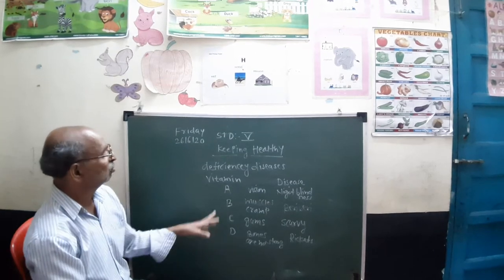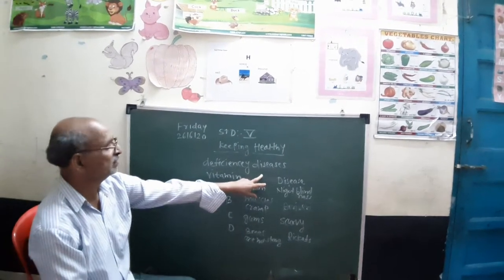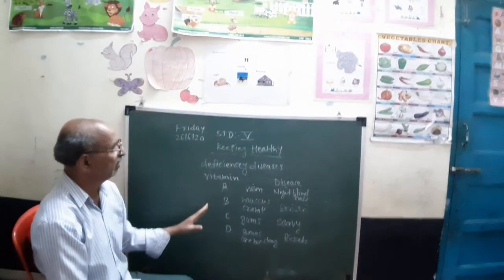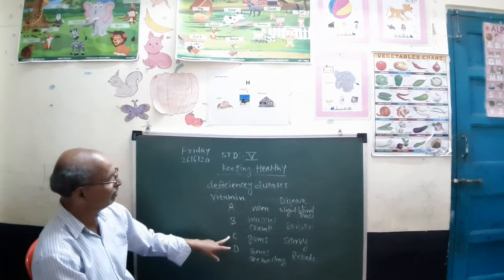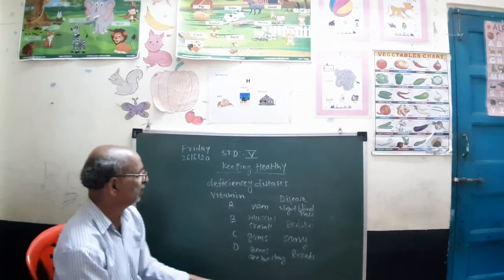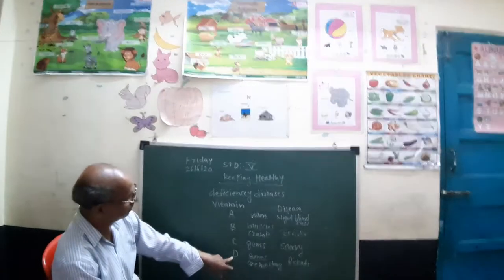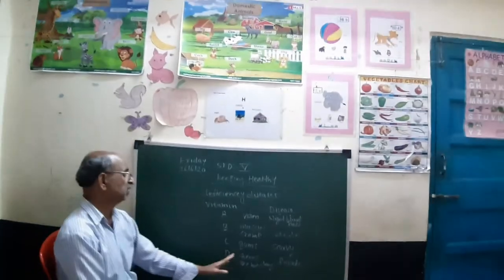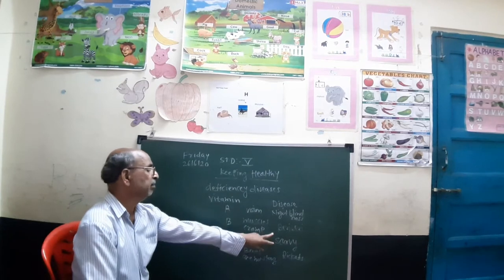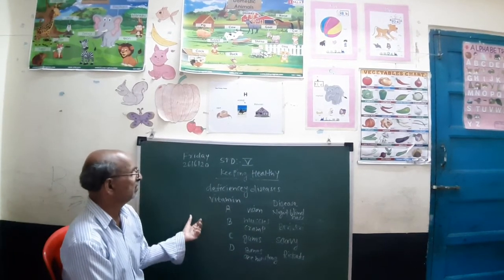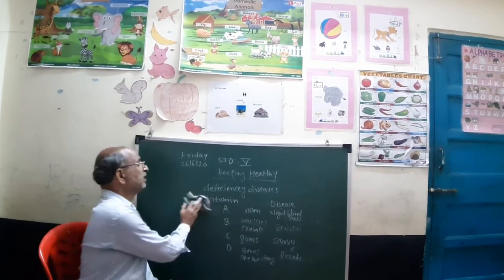If there is a lack of Vitamin D, the bones become weak and enlarged, and the disease is called rickets. Vitamin D can be obtained by keeping children in early sunlight. So night blindness, beri-beri, scurvy, and rickets are all called deficiency diseases — deficiency means lack. When a person is not getting a vitamin in the proper amount, they suffer from these diseases.